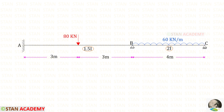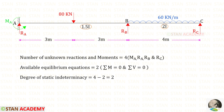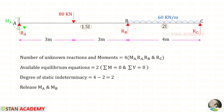At point A there is a fixed support. At point B there is a hinged support and at point C there is a roller support. The number of unknown reactions and moments is 4: moment MA and vertical reaction RA at point A, and vertical reactions RB and RC at points B and C. The degree of static indeterminacy is 4 minus 2, which equals 2. In this problem we are going to remove the moments MA and MB.